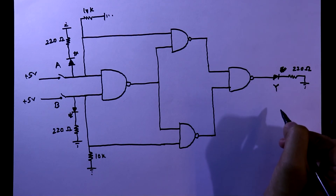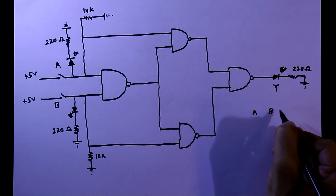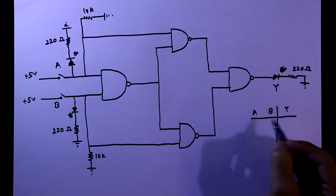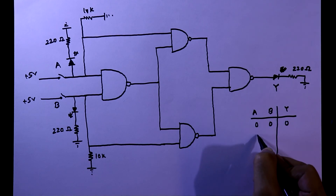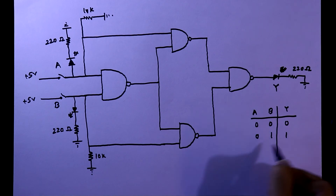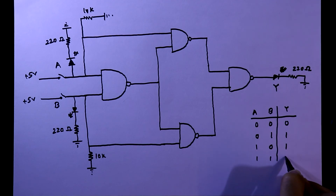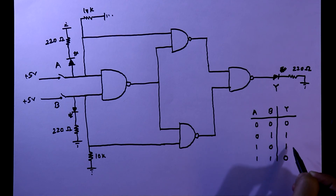The truth table of XOR gate: A and B are inputs, Y is the output. For 0,0 output is 0. For 0,1 output is 1. For 1,0 output is 1. For 1,1 output is 0. If both inputs are the same the output is 0; if inputs differ the output is 1. This is the basic XOR gate behavior.